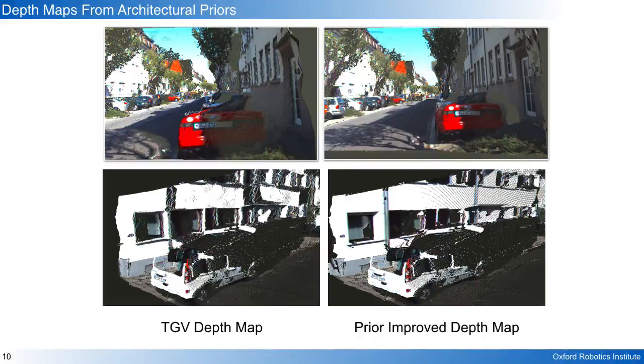This depth map appears visually better when compared to the original TGV depth map, with the walls and road surfaces appearing flat and objects well separated, as seen in the comparison above.